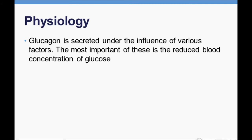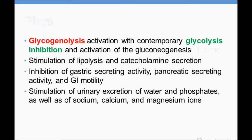Glucagon causes glycogenolysis activation with contemporary glycolysis inhibition, and activation of gluconeogenesis — it does anything to increase glucose level. It also stimulates lipolysis and catecholamine secretion, inhibits gastric and pancreatic secretory activity and GI motility, and stimulates urinary excretion of water, phosphates, sodium, calcium, and magnesium ions.